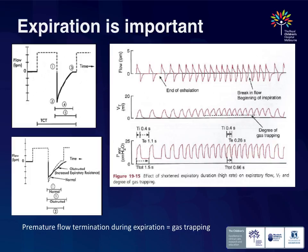Now we come to expiration. The same principles apply — we need enough time for gas to get out, otherwise we create auto-PEEP. A nice inspiratory wave followed by gas leaving the lung to a long pause shows we're at a steady state, emptying the lung before the next breath. As resistance increases, gas cannot finish emptying before the next breath starts — that creates auto-PEEP, makes it harder to ventilate, and all your numbers go in the wrong direction. In that circumstance, decrease your rate or increase expiratory time.